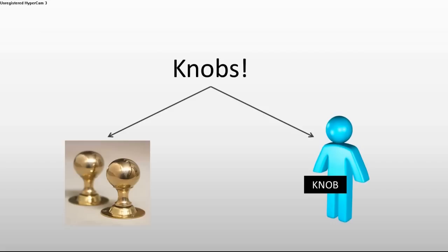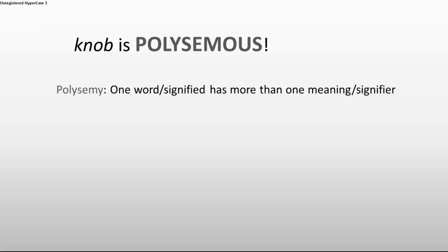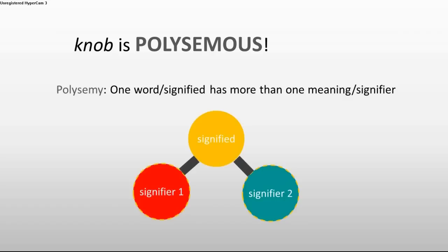To be a little more precise, we should say that knob is polysemous. Polysemy is defined as one word having more than one meaning. Or if you want to follow the Caesarian model, it would be that one signified has more than one signifier. Here you can see a model of that: one signified having a signifier 1 and a signifier 2. If we apply that to this case, it would be knob having the signifier door handle and the signifier penis.